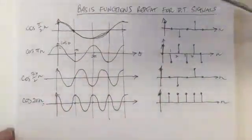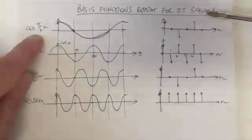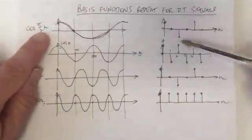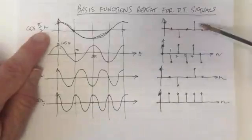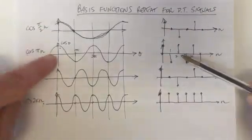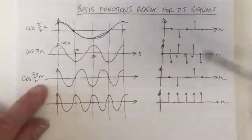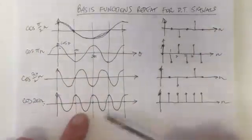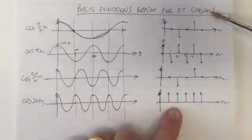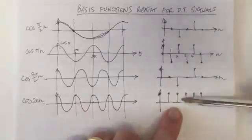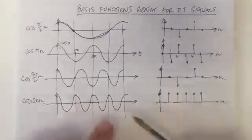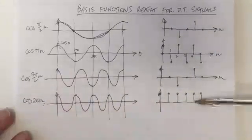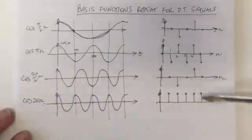We go from a waveform which is constant — if it was cos(0), it would be constant — to cos(π/2 · n) which goes through zeros, then faster for cos(πn), then faster again for cos(3π/2 · n) which is back to the same waveform as cos(π/2 · n), and cos(2πn), which is faster again, is back to the original constant. So clearly these basis functions repeat themselves.